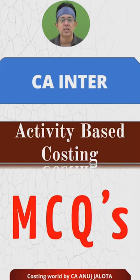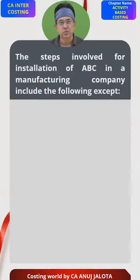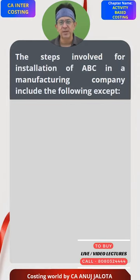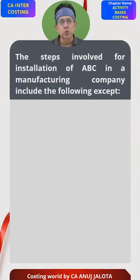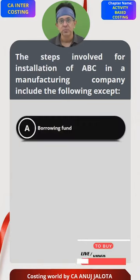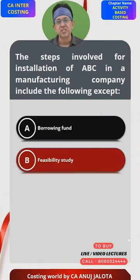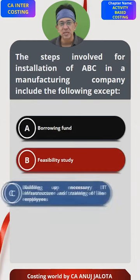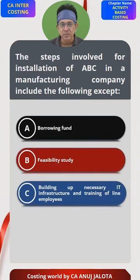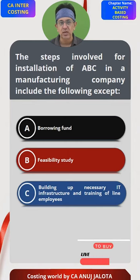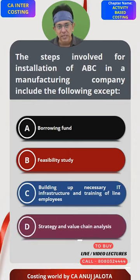Activity-Based Costing MCQ: The steps involved for installation of activity-based costing in a manufacturing company includes the following except — A. Borrowing of funds, B. Feasibility Study, C. Building up the necessary IT infrastructure and training of line employees, D. Strategy and Value Chain Analysis.